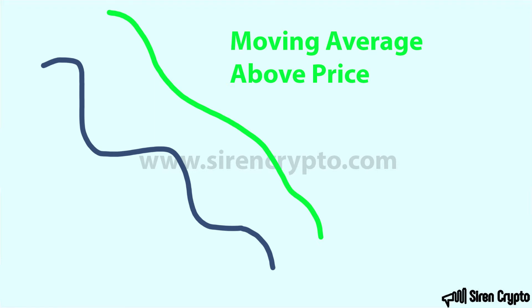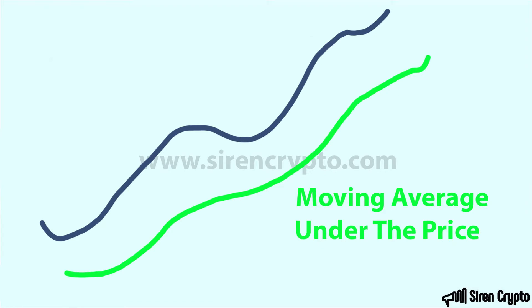Now let's look at a market that has turned a corner and is trending up. If we look at our moving average, it's taking into account lower prices from history over the last 20 days, so it's going to be lagging underneath the market. The moving average will have a lower value than where the market is currently trading if that market is in an uptrend.